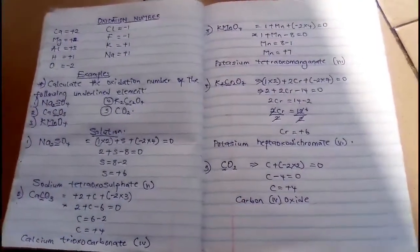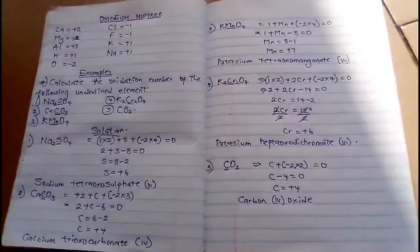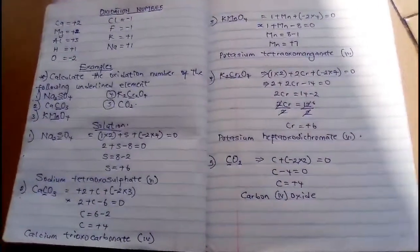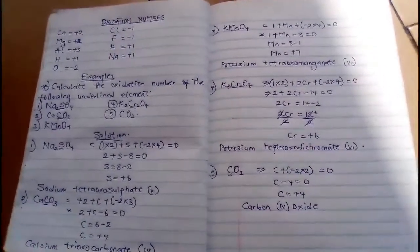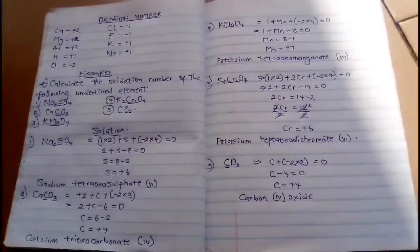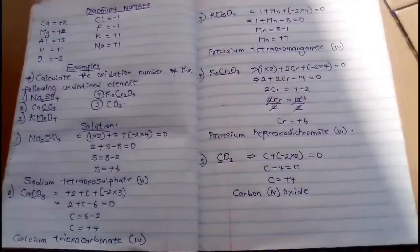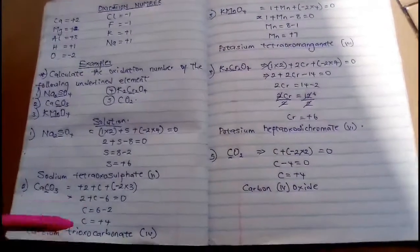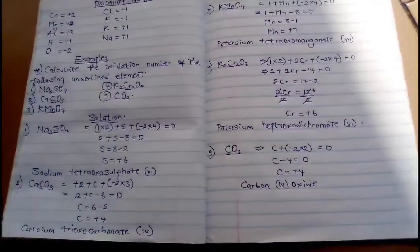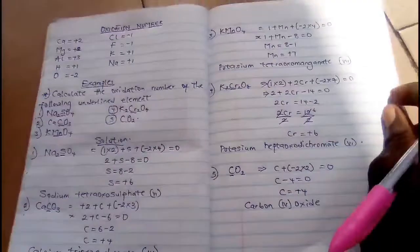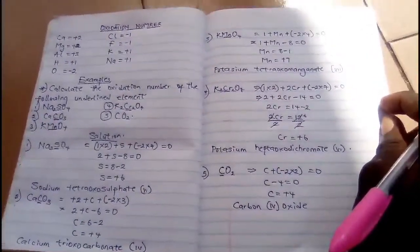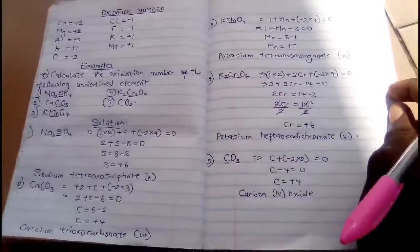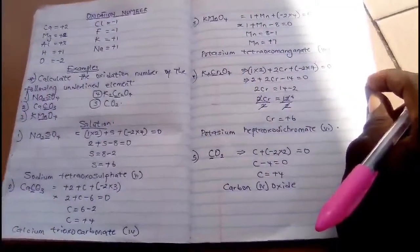So please, all these oxidation numbers of elements are very simple and very easy to get. You can say sodium tetra-oxo-sulfate VI, that's for Na₂SO₄. Even H₂SO₄, hydrogen tetra-oxo-sulfate VI. You solve it, you can just get the answer. It's easy. Likewise, CaCO₃ is calcium tri-oxo-carbonate IV, KMnO₄ is potassium tetra-oxo-manganate VII, and K₂Cr₂O₇ is potassium hepta-oxo-dichromate VI.